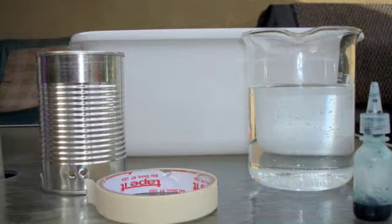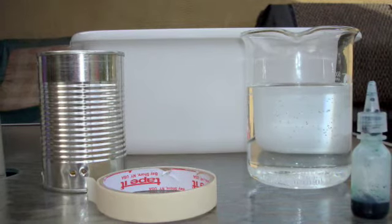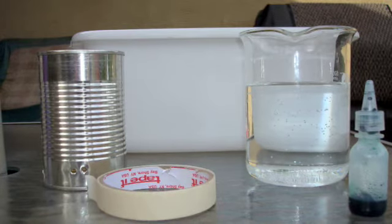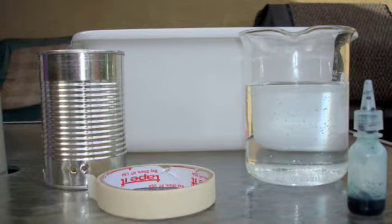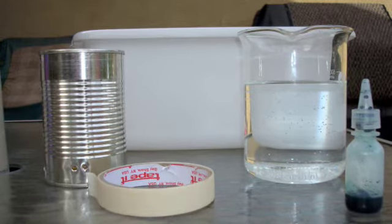First, you need a tin can with some small holes poked into it, about a quarter of an inch apart, some masking tape to seal up the holes while you pour the water in, a beaker or container of water, food coloring to make the water easier to see, and a basin to catch the water. A sink would work also.